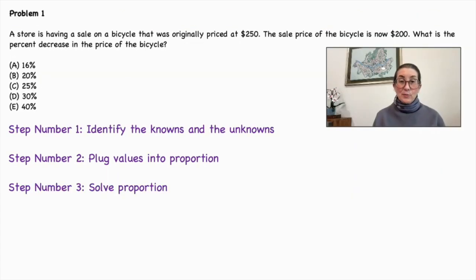Problem number one, let's put theory into practice. A store is having a sale on a bicycle that was originally priced at $250. The sale price of the bicycle is now $200. What is the percent decrease in the price of the bicycle? 16%, 20%, 25%, 30%, or 40%? Let's begin by identifying the knowns and the unknowns.